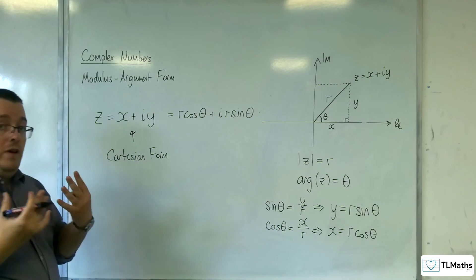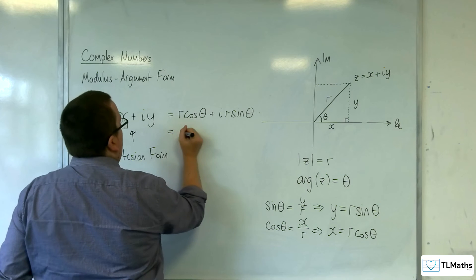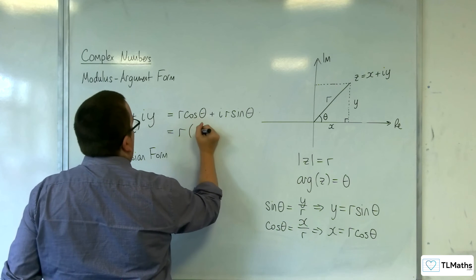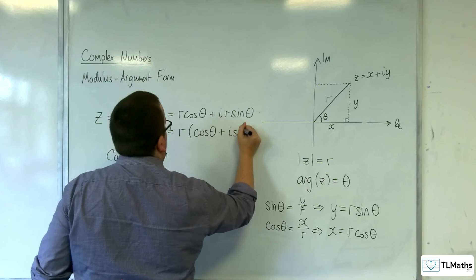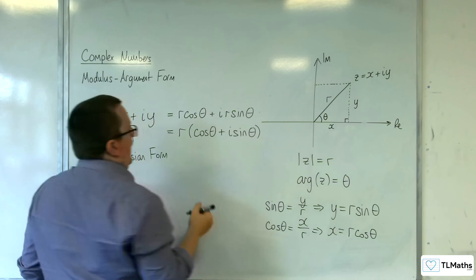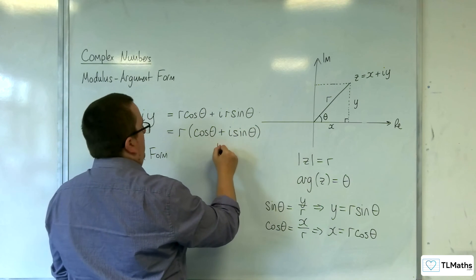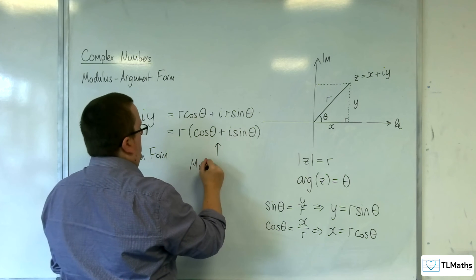Now, if you factor out the R, you have R lots of cosine theta plus I sine theta. And this is modulus argument form.